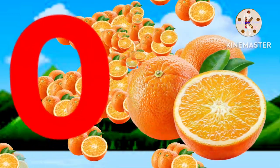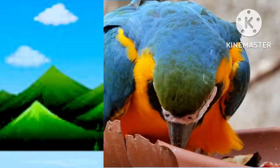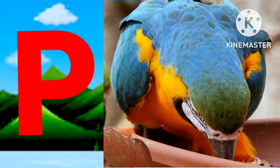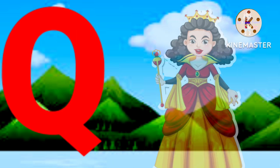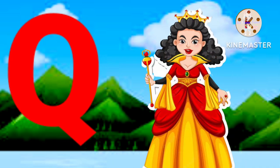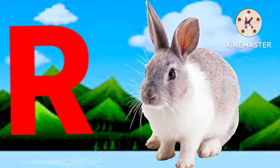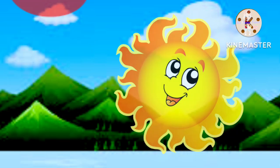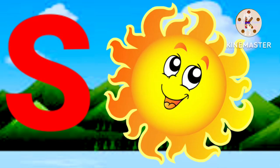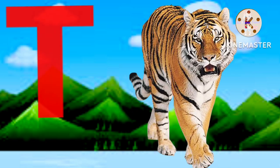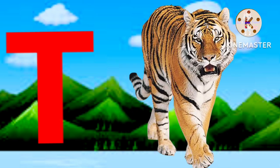O for orange, B for parrot, Q for queen, R for left, S for sun, T for tiger.